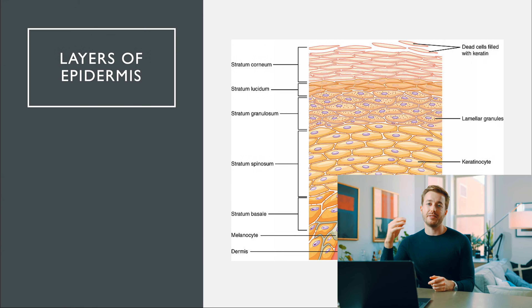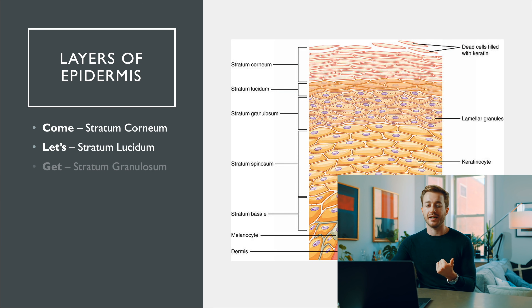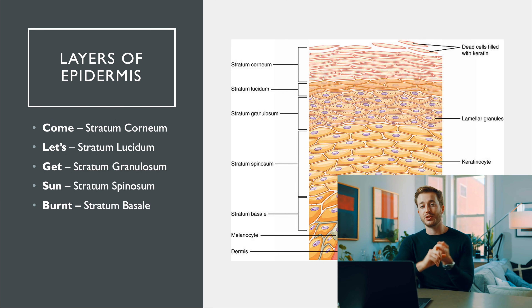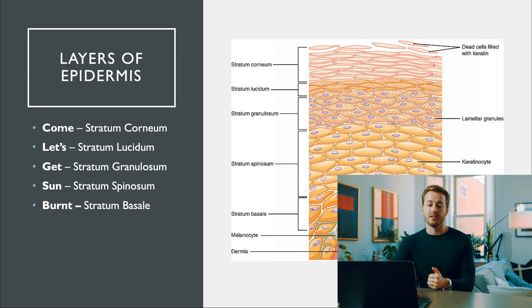The next one covers the layers of the epidermis from top to bottom: Come Let's Get Sunburned — stratum corneum, stratum lucidum, stratum granulosum, stratum spinosum, and stratum basale.